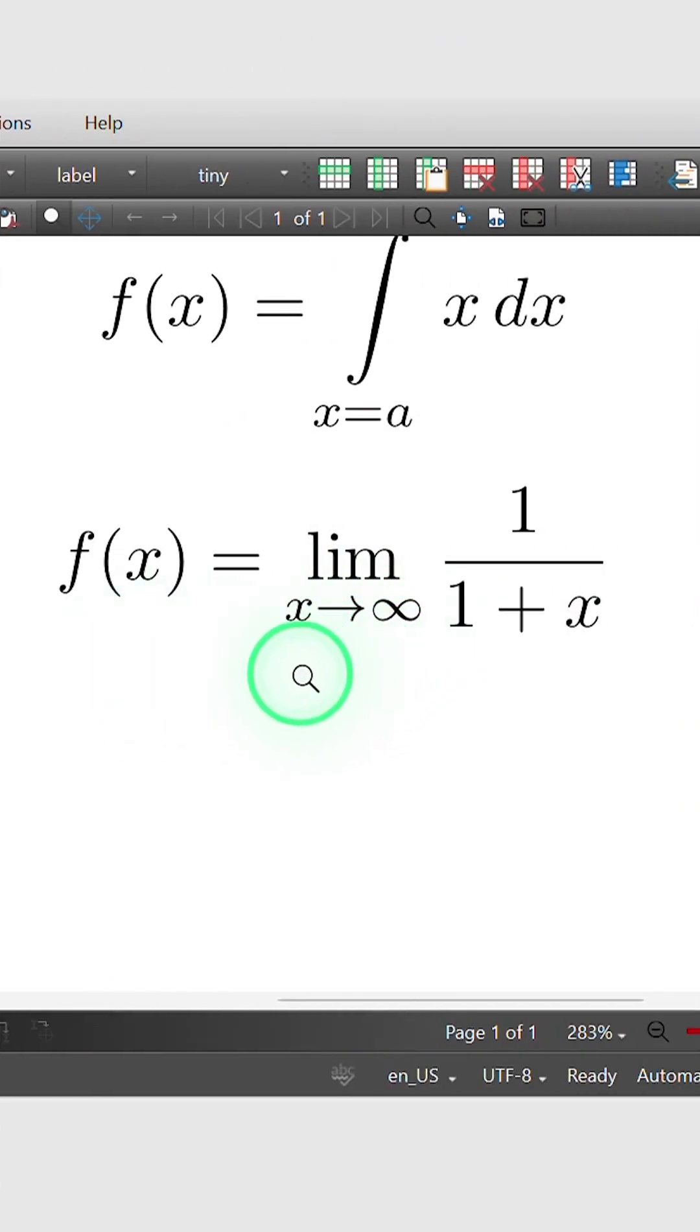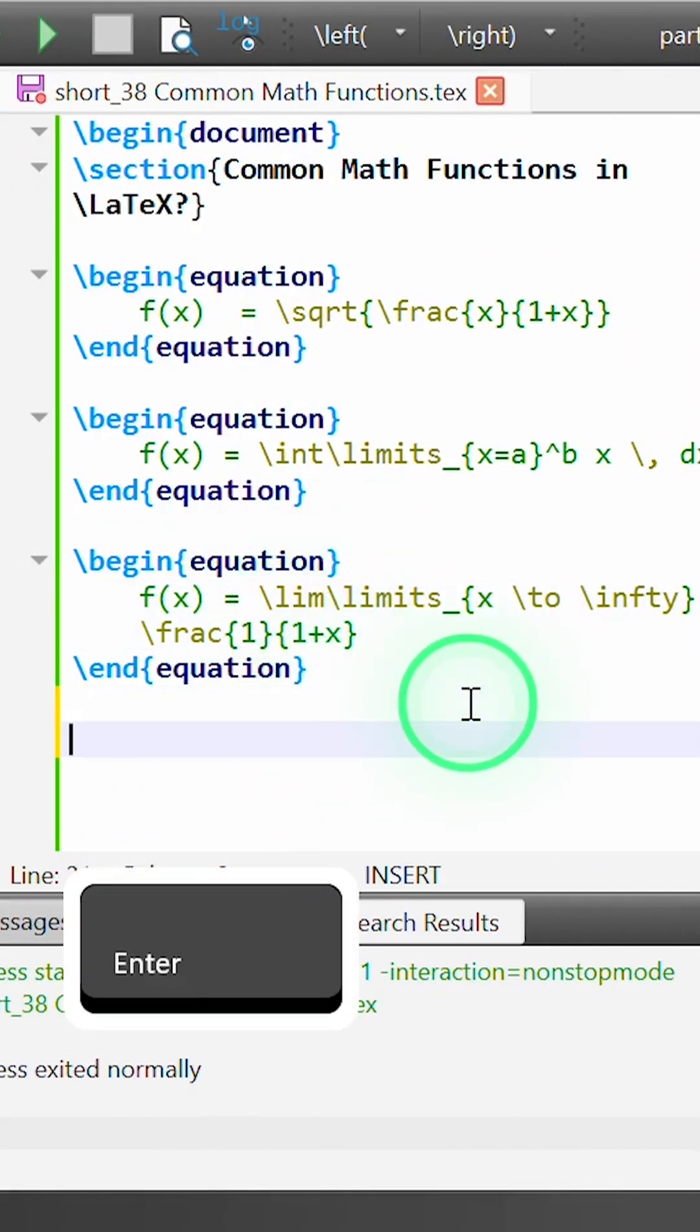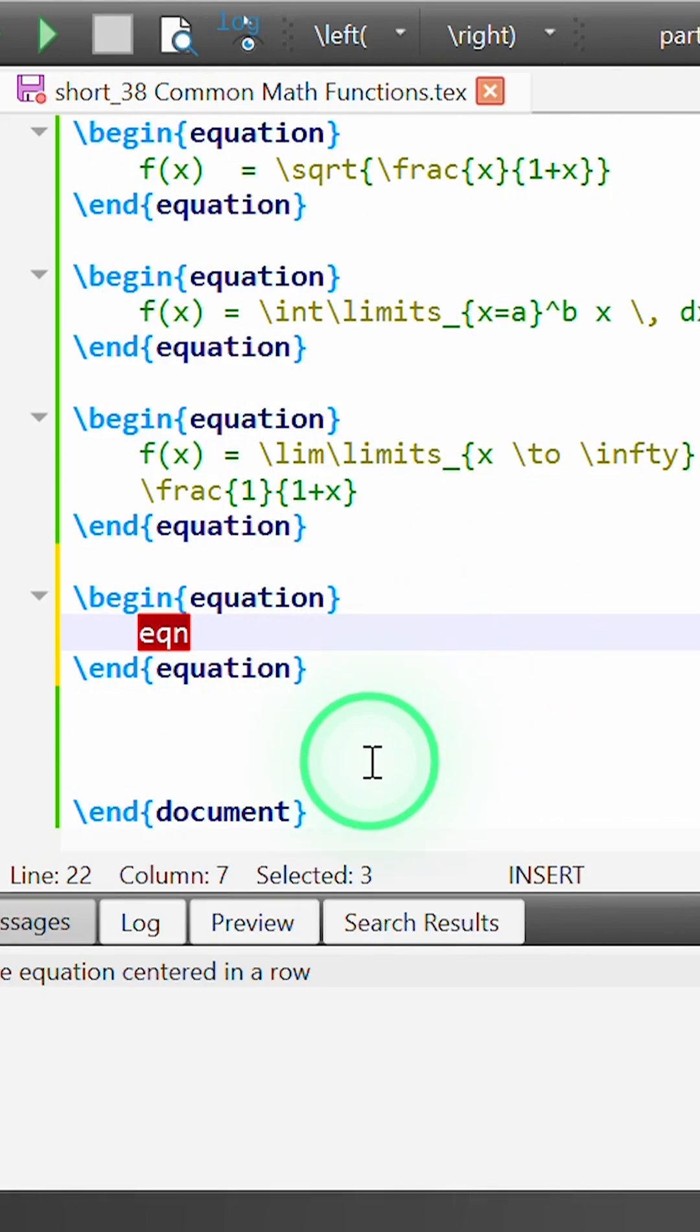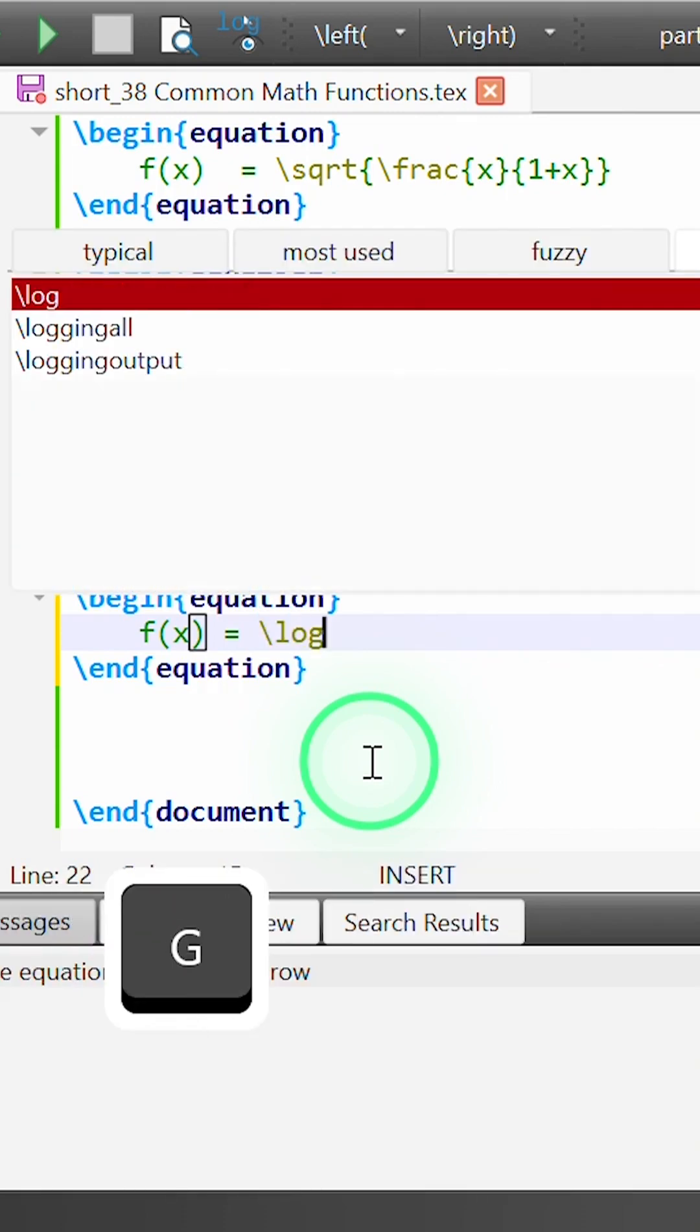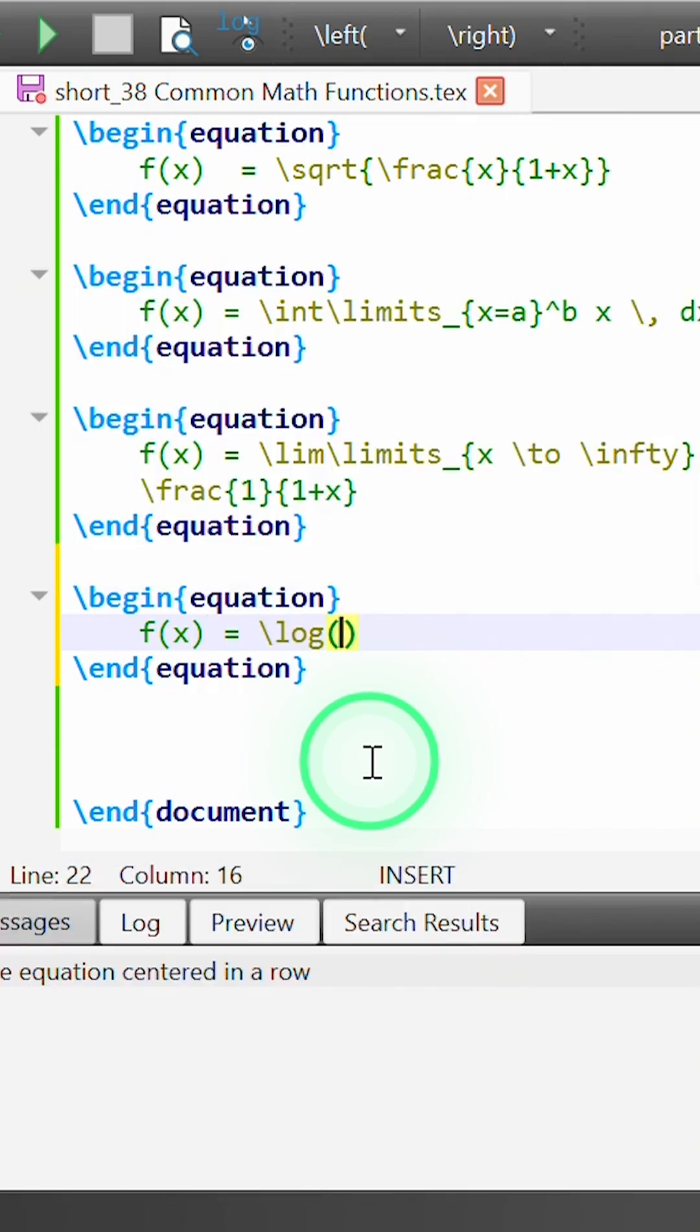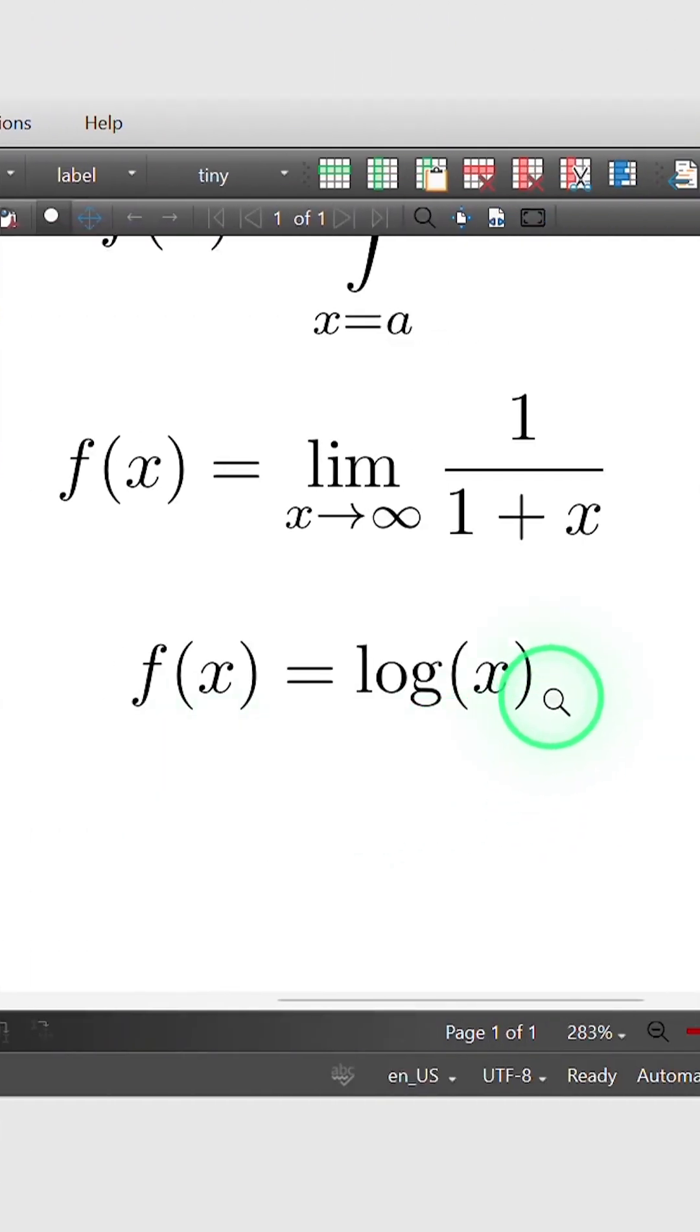f of x equals the limit as x tends towards infinity of 1 over 1 plus x. As well as writing limits with the \lim command, similarly we can write logs with the \log command. For instance, if I write f of x equal to log of x, I can use the command \log and then enclose our log expression within braces. If I rebuild this you can see we get the function log of x,